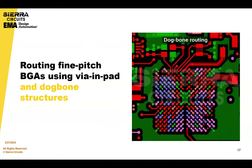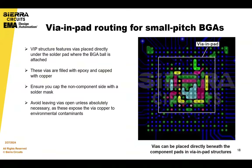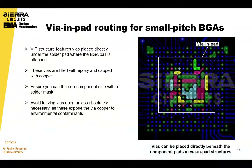We're going to go through some examples of routing BGAs using VN pad and dog bone structures. VN pad technology basically means you're placing vias directly underneath pads that will get solder on them. This allows for more efficient signal routing and enhanced thermal performance, as well as mechanical support. These vias are filled with epoxy and capped over with copper. The process: drill, plate with copper, fill with epoxy, bake and planarize, then plate over with copper.